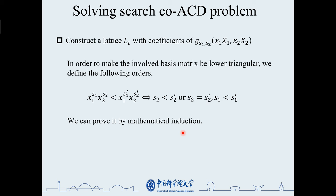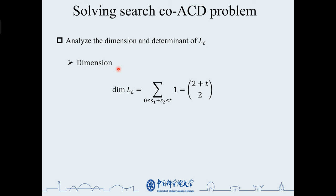In the following, we calculate the conditions of the root bound. First, we analyze the dimension and the determinant of the lattice. The dimension of the lattice is the number of monomials, that is, all the possibilities that satisfy s1 plus s2 greater than 0, less than t.